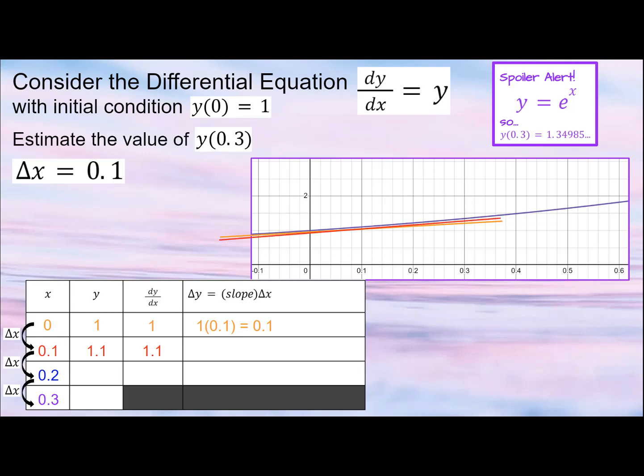If we used local linearization with the red line to estimate y of 0.3, we'd have an even more accurate estimate than our previous estimate with the (0, 1). Add this change in y to the previous y, and repeat the process one more time.